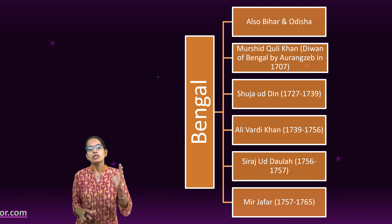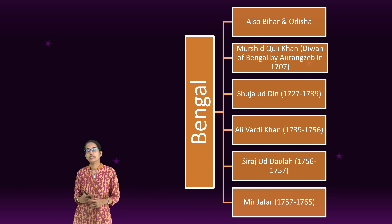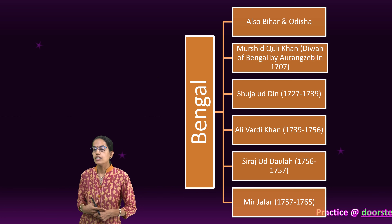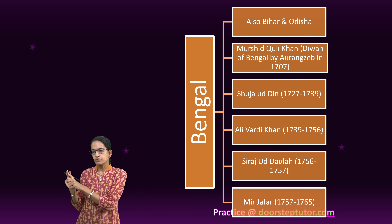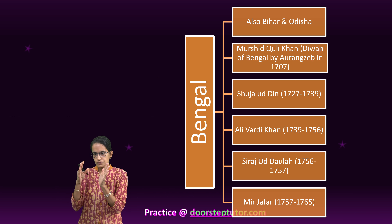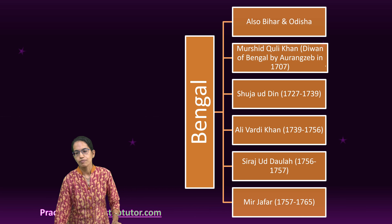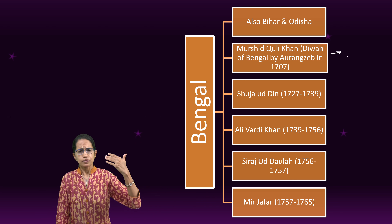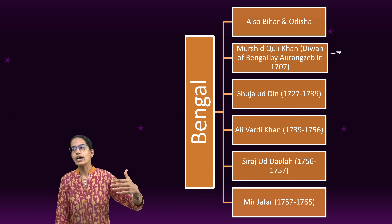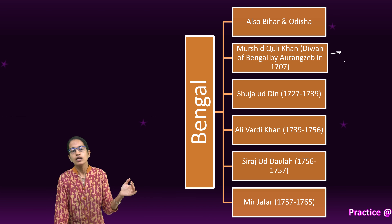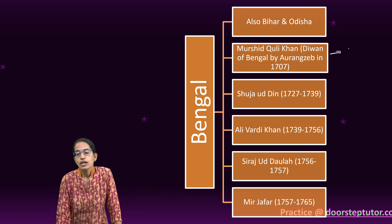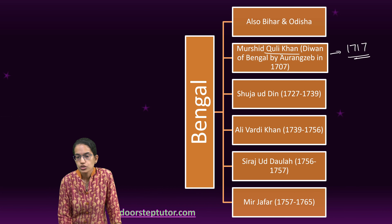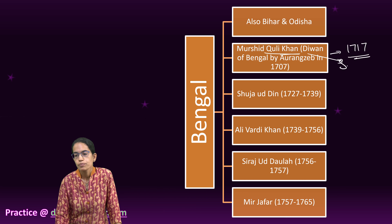Murshid Kuli Khan was the divan of Bengal, assigned this divanship by Aurangzeb in 1707. He was later appointed the subedar of Bengal by Farukh Siyar. After Aurangzeb came Bahadur Shah I, then Jahandar Shah and Farukh Siyar. In 1717, Farukh Siyar said that Murshid Kuli Khan should be the subedar of Bengal.